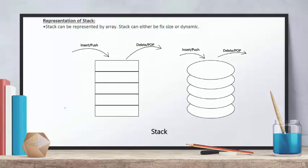Next is the representation of the stack. A stack can be represented by two ways: first, it can be static — we can say a fixed size array — or dynamic, by using a linked list. So we can create a stack in two ways: first by using an array, which we normally use, and second dynamic — using a linked list or any other method where the stack size is not fixed.